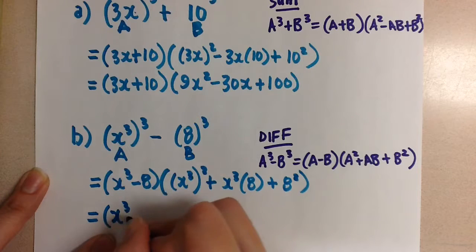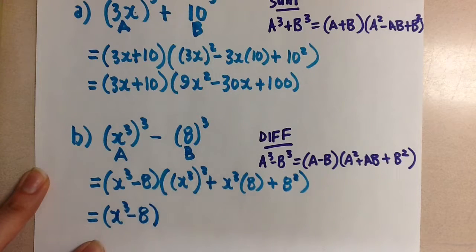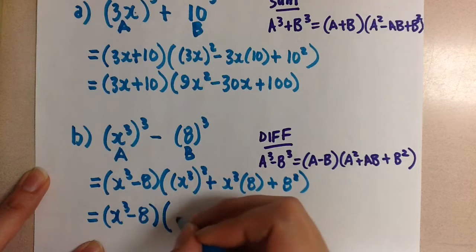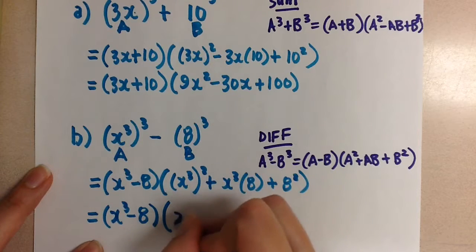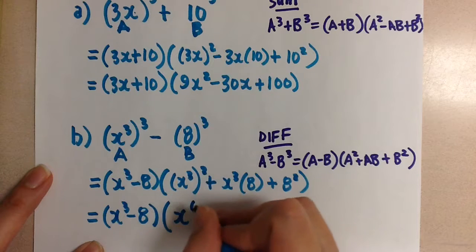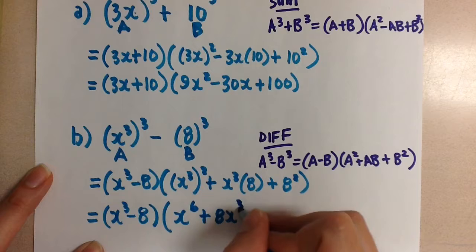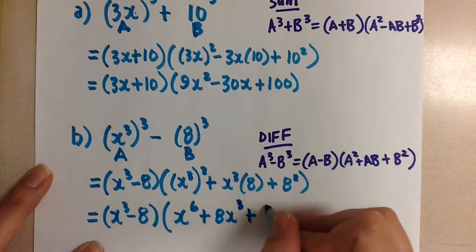x to the 3 minus 8 times x, we have a power of a power here, 3 times 2 is 6, plus 8x cubed plus 64.